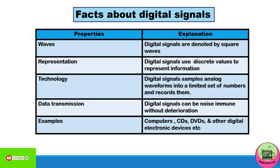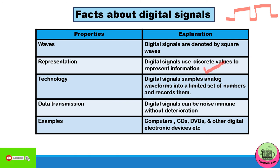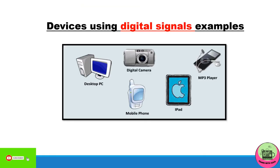Digital signals are denoted by square waves, as seen in the graph, whereas analog signals use sine waves. Digital signals use discrete values to represent information. A digital signal samples analog waveforms into a limited set of numbers and records them — they don't record waveforms as they are, but first sample into numbers and then record. Data transmission can be noise immune without deterioration; digital signals are not prone to noise. Examples are computers, CDs, and DVDs.